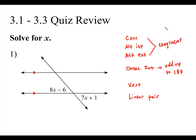Remember, when the two lines are parallel, corresponding, alternate interior, and alternate exterior angle pairs are congruent. If the angle pairs are consecutive interior, when the lines are parallel, the two angles have to add up to 180. And remember we also learned about vertical angles and linear pairs from chapter one, which we're always going to look out for and use.